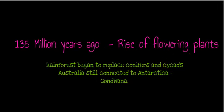135 million years ago saw the rise of flowering plants. Before flowering plants had evolved, most environments were dominated by conifers and cycads. The rise of flowering plants and their ability to pollinate and disperse seeds led to a dramatic change in all environments, and specifically the Australian environment. Rainforests began to replace conifers and cycads around this time.